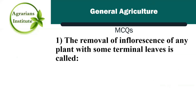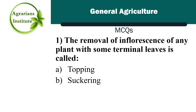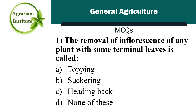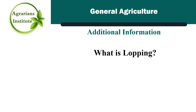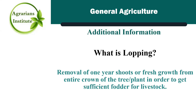The first MCQ: the removal of inflorescence of any plant with some terminal leaves is called — Option A is topping, Option B is suckering, Option C is heading back, and Option D is none of these. The correct answer is A, topping. Lopping is the removal of one-year shoots or fresh growth from the entire crown of the tree or plant in order to get sufficient water for livestock.